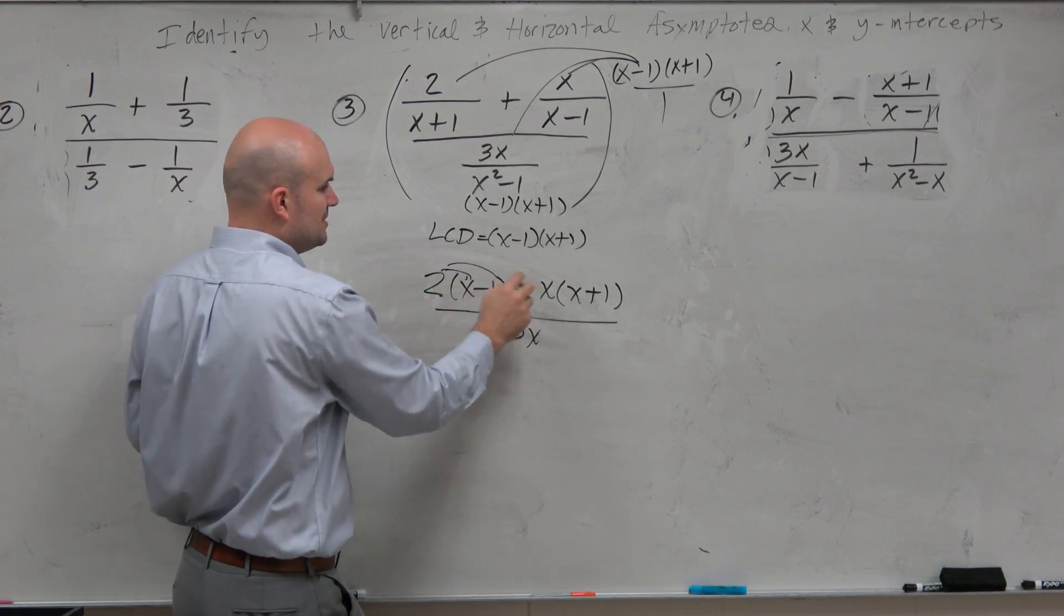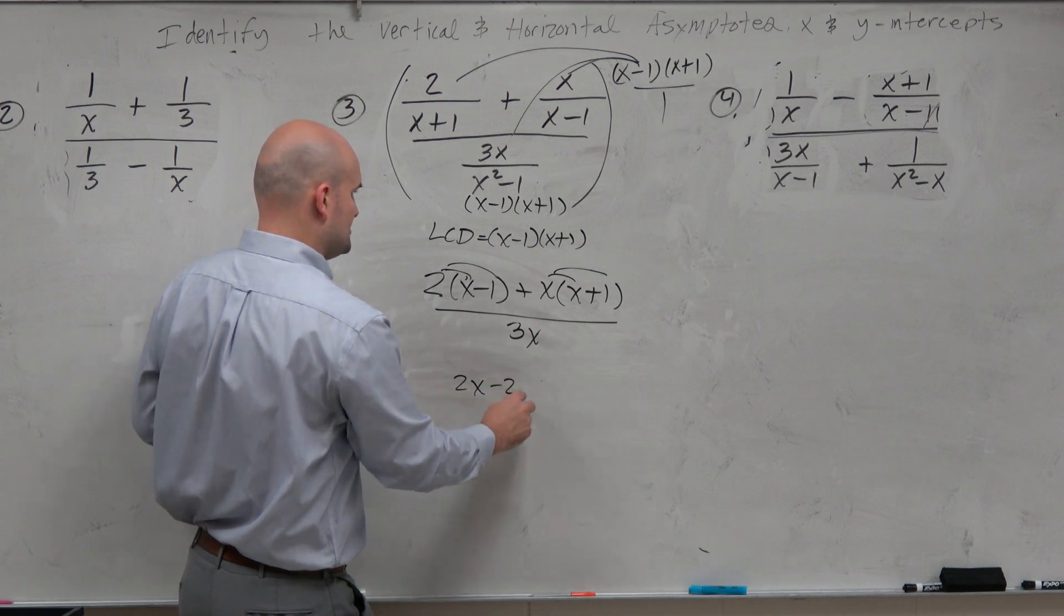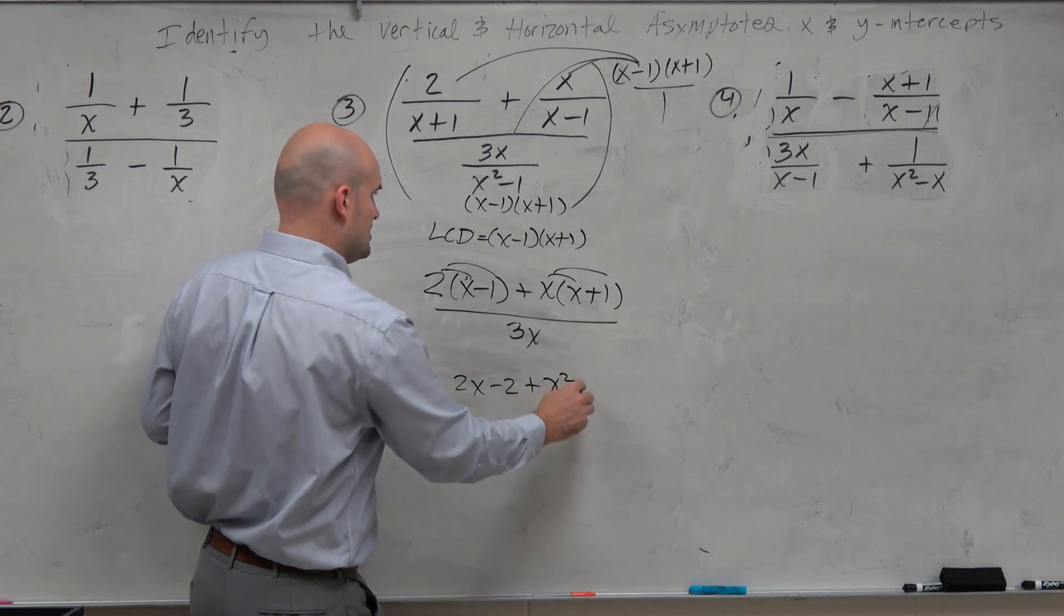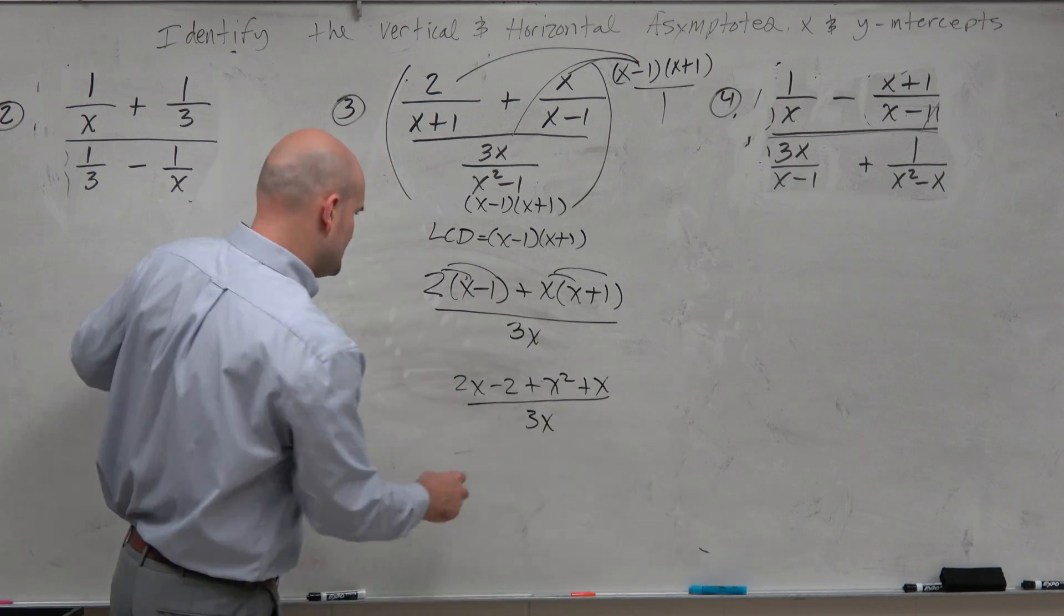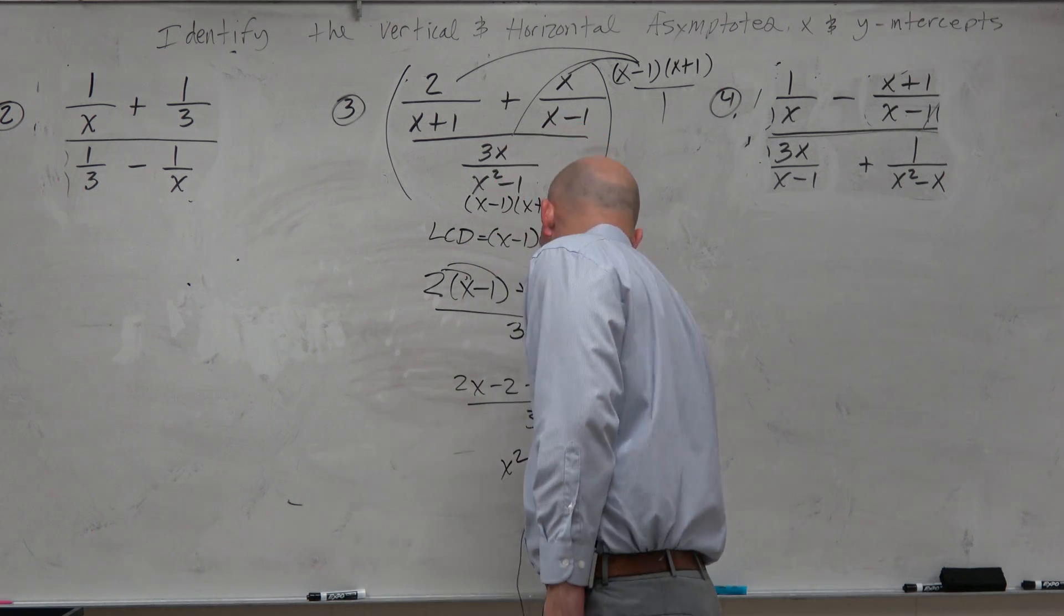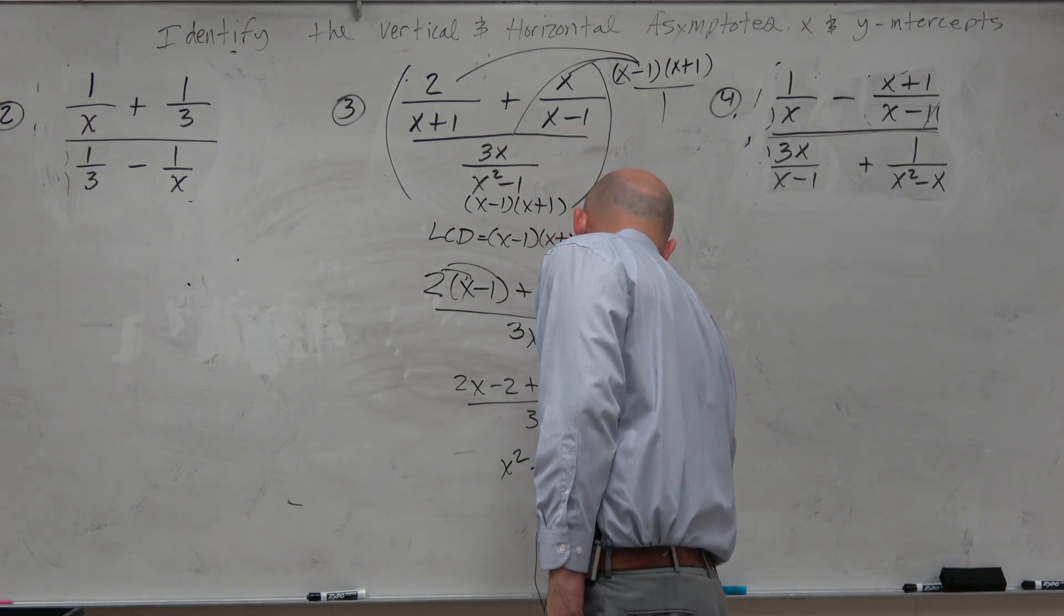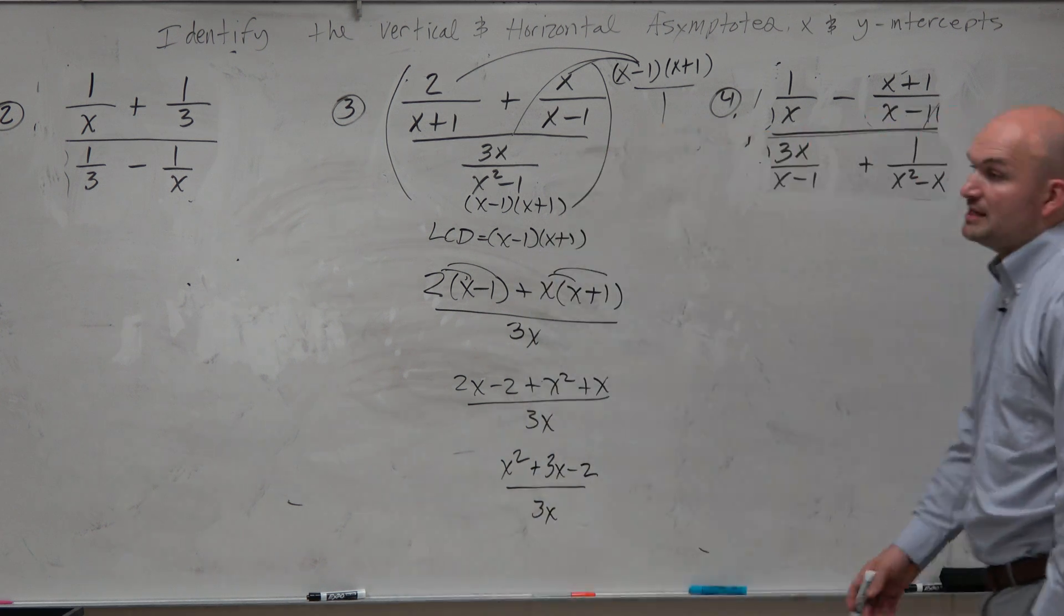Now we can just apply distributed property. And so this is 2x minus 2 plus x squared plus x over 3x. And then we can just combine like terms. And I get x squared plus 3x minus 2 over 3x. So that is my simplified answer.